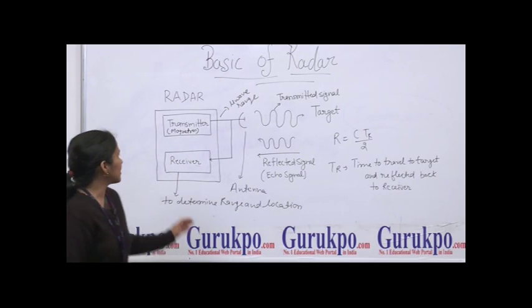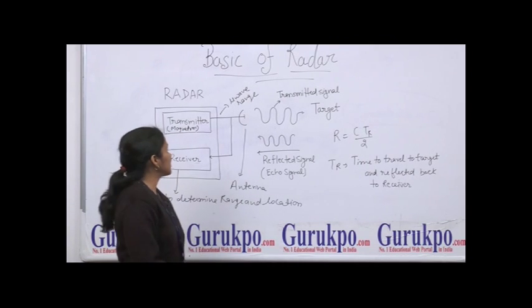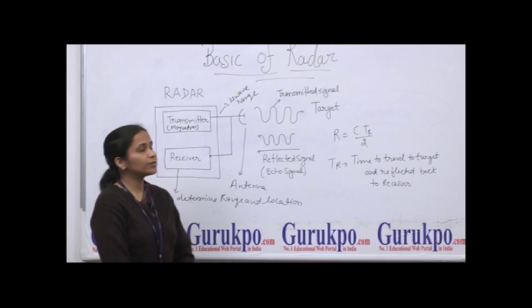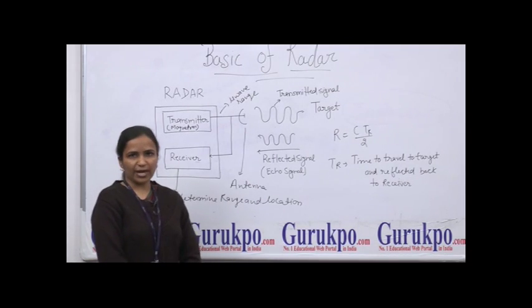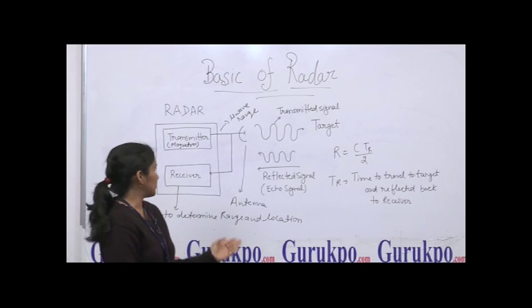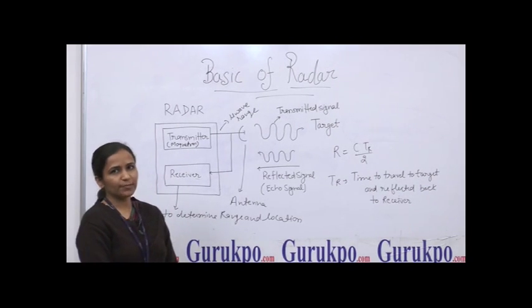Radar is a combination of two devices: transmitter and receiver. In the transmitter, we generate a signal to transmit in the environment. Here we use a microwave source to generate the transmitted signal. It may be magnetron, reflex klystron, or klystron, but here we use magnetron to generate the microwave signal.